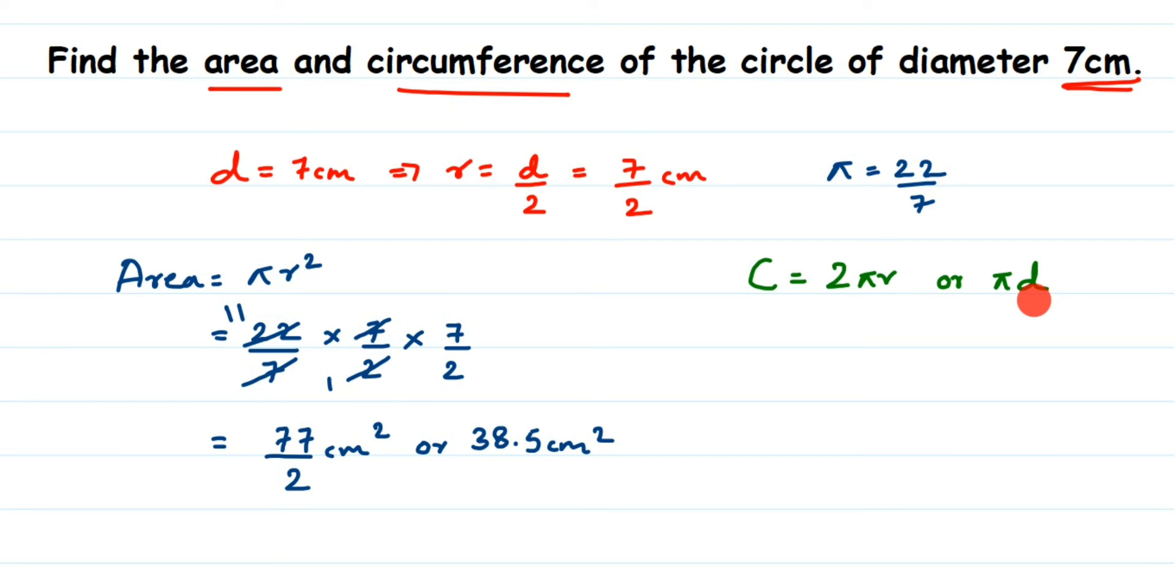In place of 2r we're going to put d, so you can use any formula: 2πr or πd. We're going to get the same answer. Here we know the radius is 7/2 and we directly know diameter is 7. Here I'm going to use the formula πd. You can use 2πr also if you want.